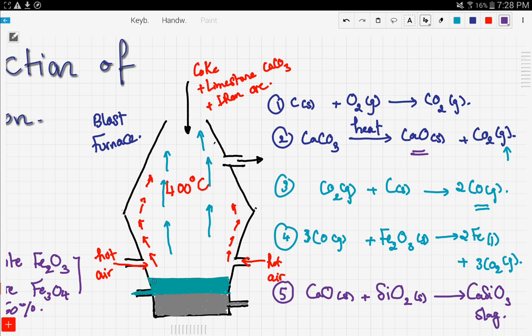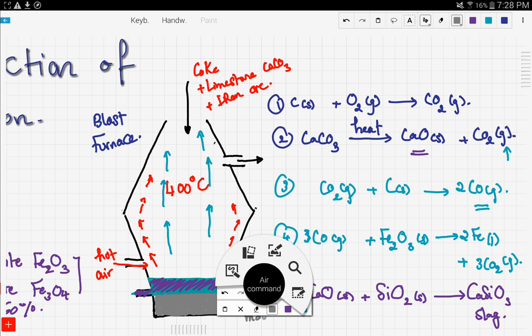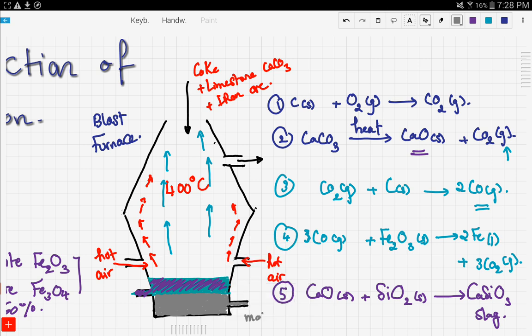In the furnace, the slag will be right here in purple color, and the gray color is the molten iron. So this is the molten iron and that one is the slag.